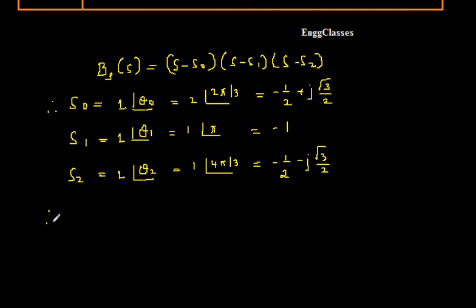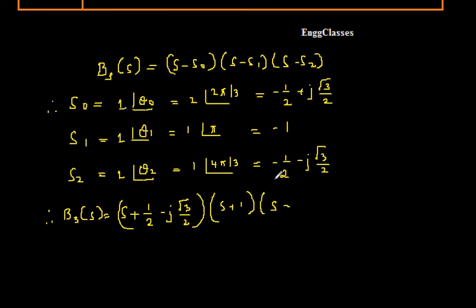Now therefore I can write B3 of S. I will consider the formula S minus S0. S0 is this value: S plus 1 by 2 minus j root 3 divided by 2. Then S minus S1, S1 is minus 1, so I get S plus 1. Similar to the last one, S minus S2 gives S plus 1 by 2 plus j root 3 divided by 2.